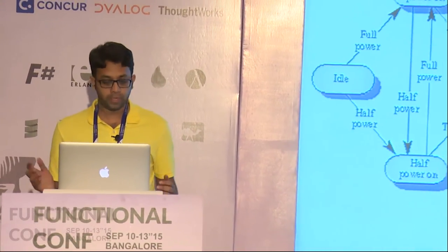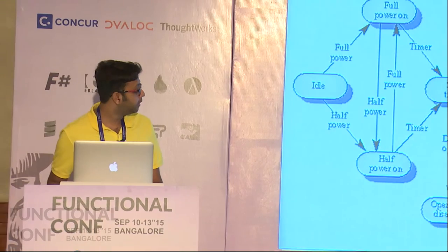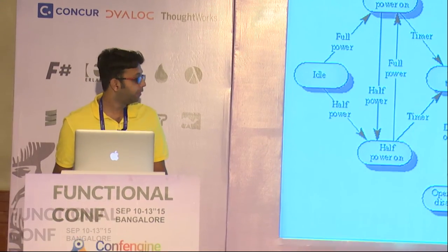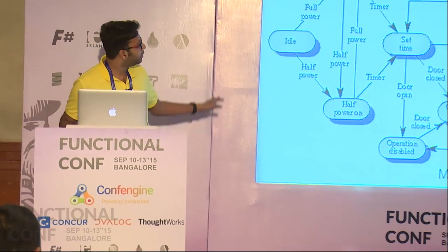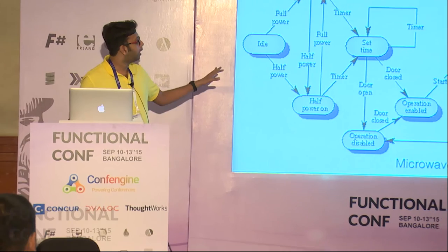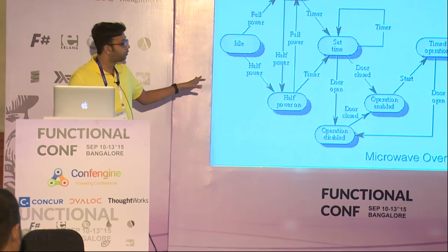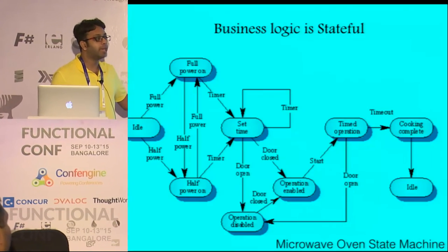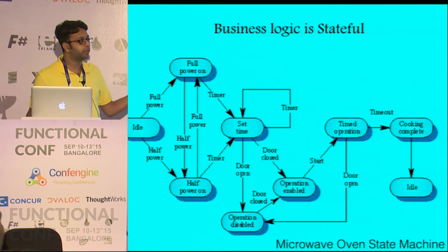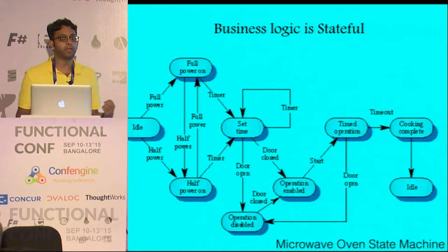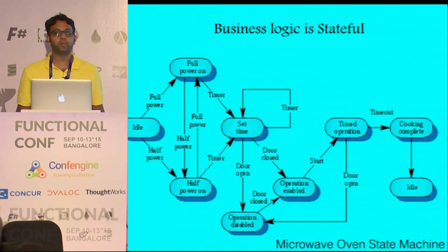There are a lot of cases to worry about, there are a lot of combinations. So for example, here is the microwave oven state field diagram and as you can see there are a lot of transitions that can happen and it has inherent state built into it, which needs to be tested.